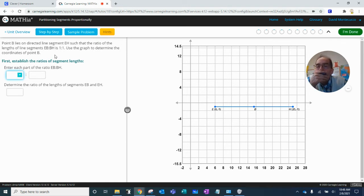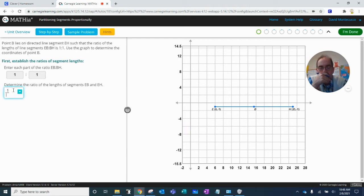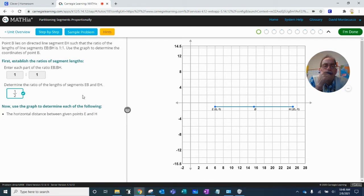Okay, 1 to 1, EB, BH is 1 to 1, so 1, 1. Determine the ratio, 1. So 1 to 2, 1 out of the hole.